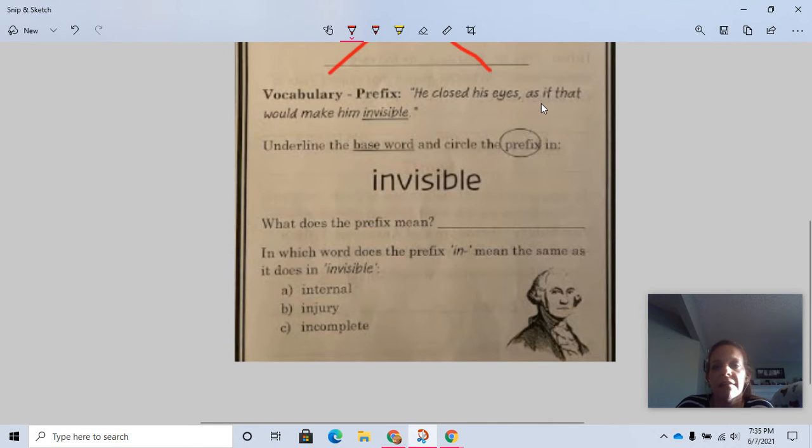He closed his eyes as if that would make him invisible. Let's look at the word invisible. We're going to underline the base word and circle the prefix in invisible. The base word in invisible is visible.